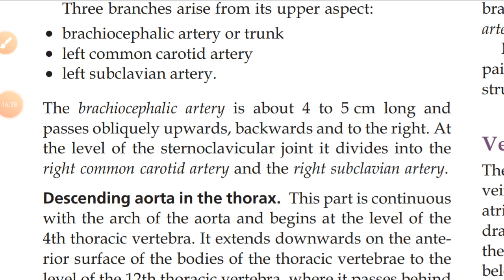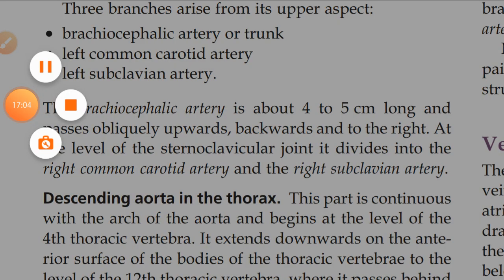The brachiocephalic artery is about 4 to 5 cm long and passes obliquely upward, backward, and to the right. At the level of the sternoclavicular joint, it divides into the right common carotid artery and the right subclavian artery.